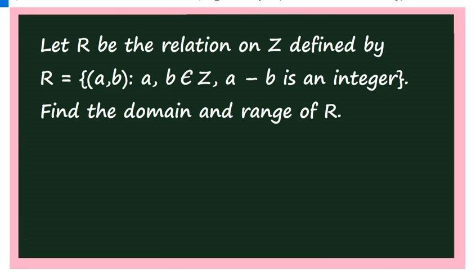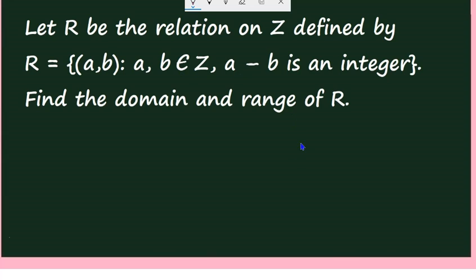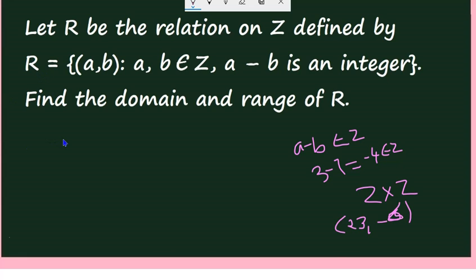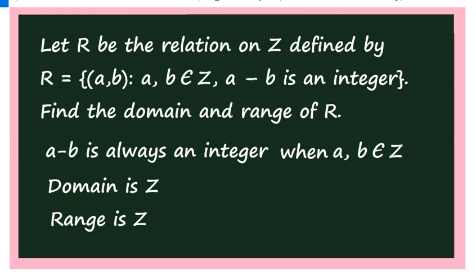See the last question: let R be the relation on Z defined by R = {(a, b) given that a, b ∈ Z, and a − b is an integer}. Find the domain and range of R. If a and b are any integers, a − b is always an integer — for example, 3 − 7 = −4, which is an integer. Therefore, all elements of Z × Z are in R, so the domain is Z and the range is also Z. This completes the exercise. The next concept — functions — will be covered in the next video. Thank you.